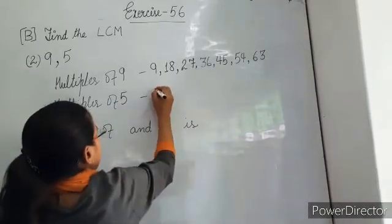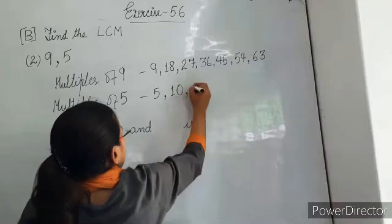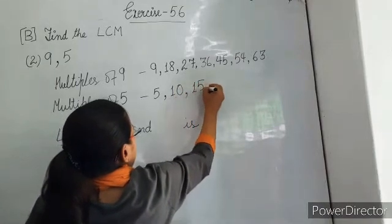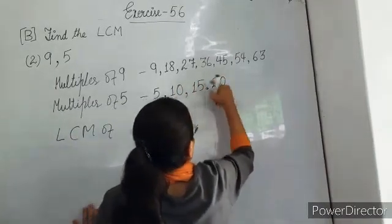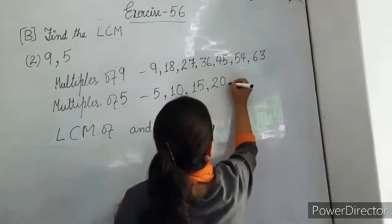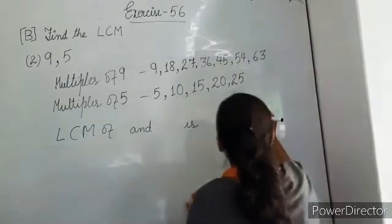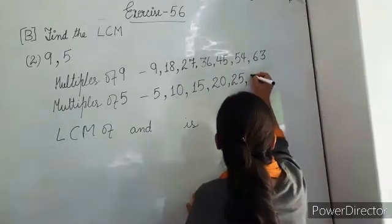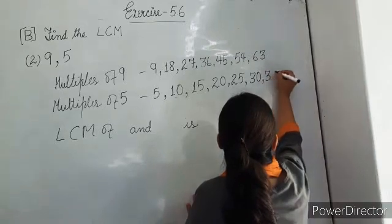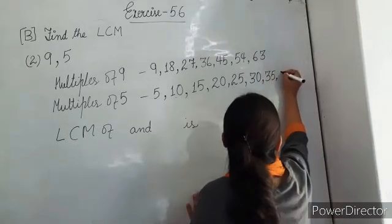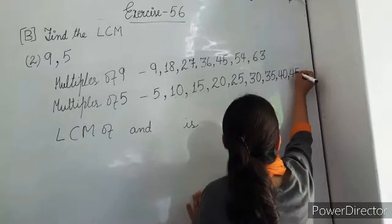Now write the multiples of 5: 5, 10, 15, 20.